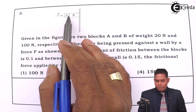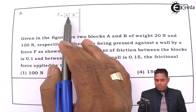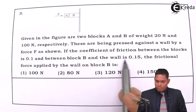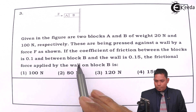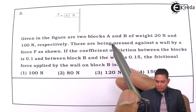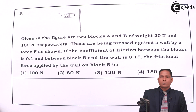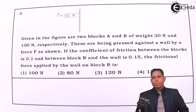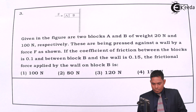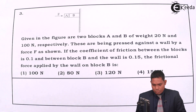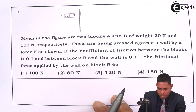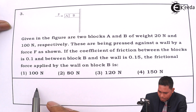So there are different friction coefficients at different surfaces. We need to find the frictional force applied by the wall on block B — that means how much friction the wall exerts on block B. Let us understand the situation and draw the diagram.